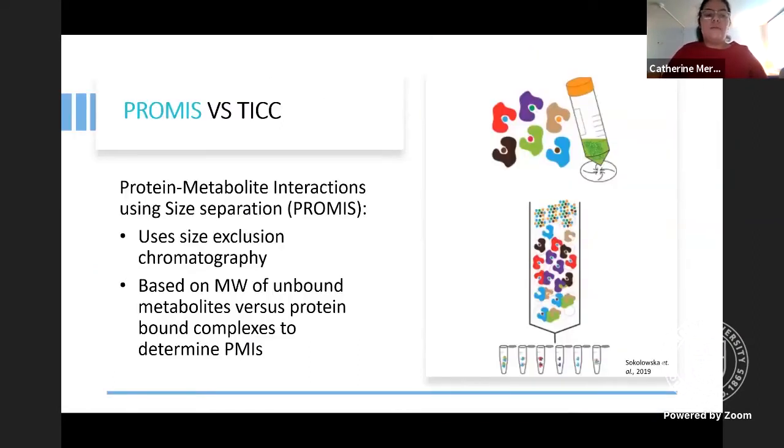To go into detail about what PROMIS is, it relies on size exclusion chromatography. In size exclusion chromatography, elution is based on the size and shape correlated with a molecule's molecular weight with larger molecules eluting before smaller ones. PROMIS is dependent on the differences in size of a free small metabolite with a much larger protein-metabolite complex. If a metabolite is found to have both eluted in a higher and lower molecular weight retention time, it can be assumed that the metabolite is in complex and indicate a possible PMI in that fraction.